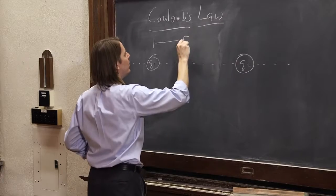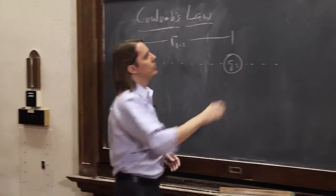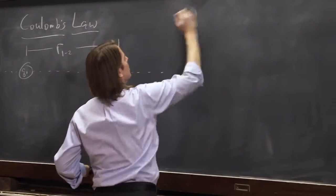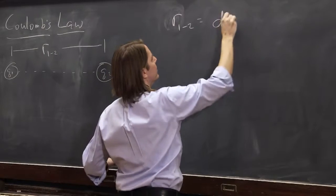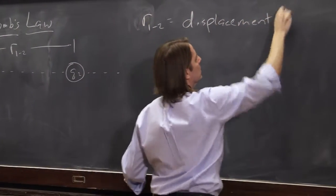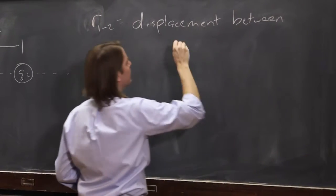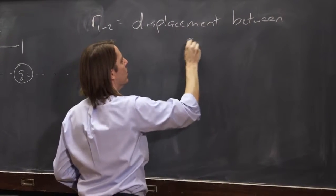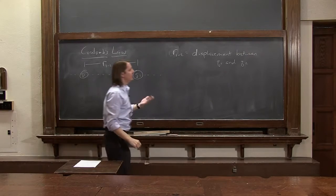And we're now going to call this 1, 2, R1,2. Okay, so R1,2 is the displacement between charge 1 and charge 2. The displacement if you go from 1 to 2.